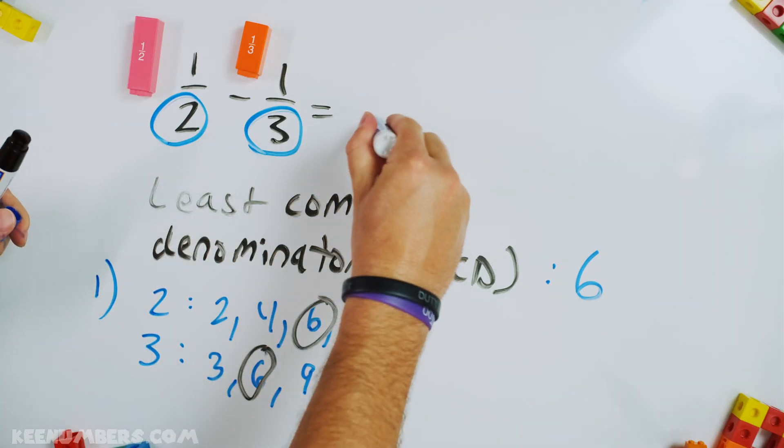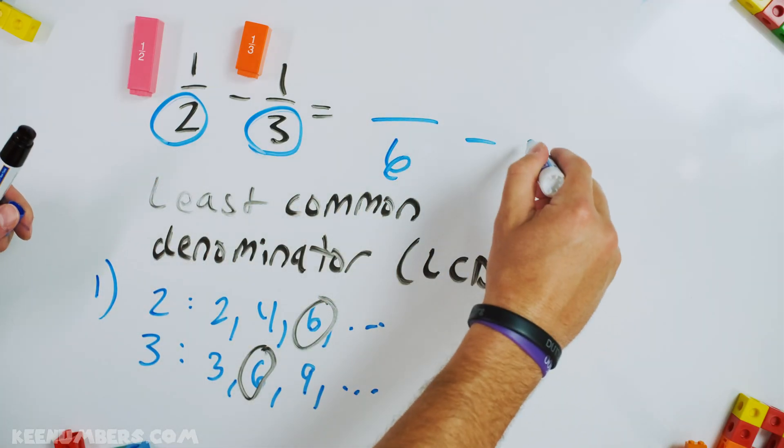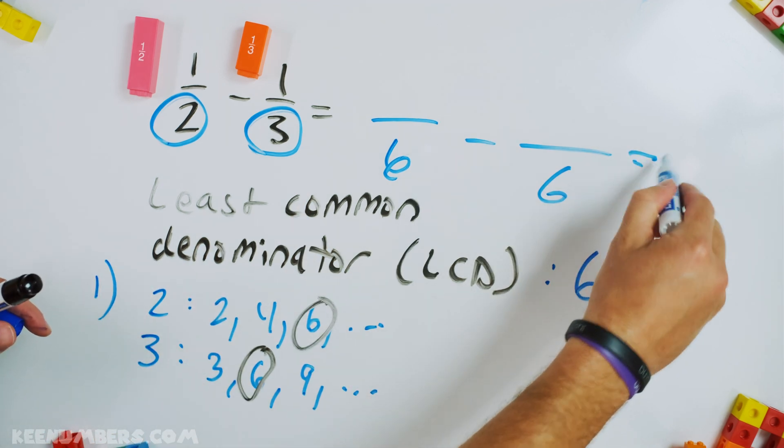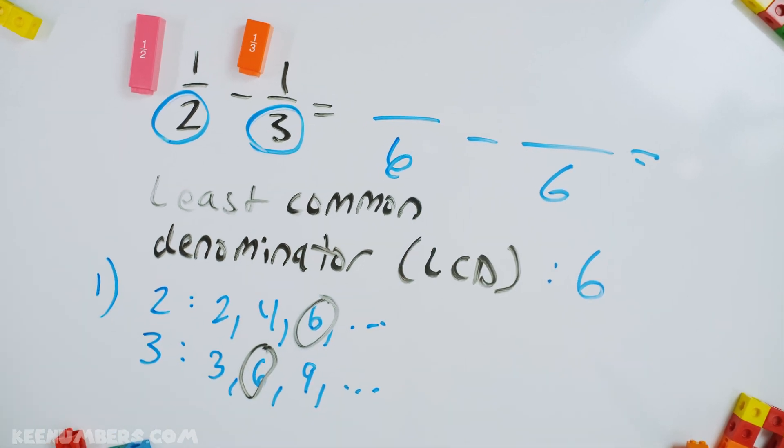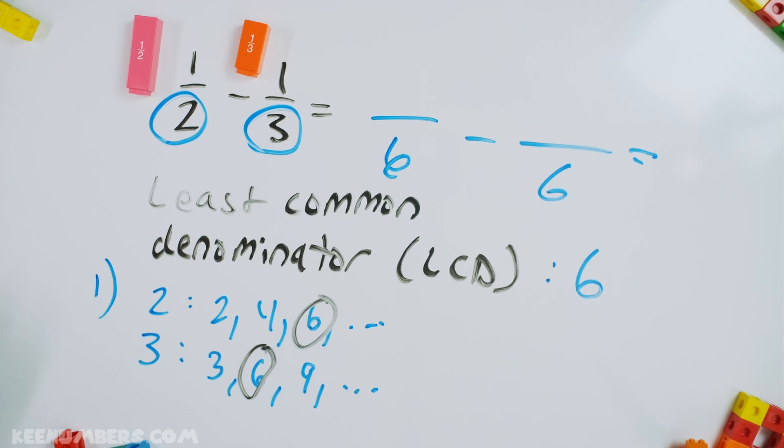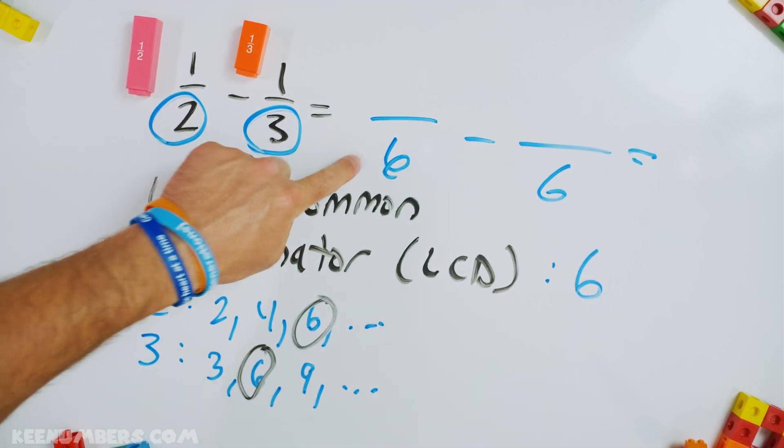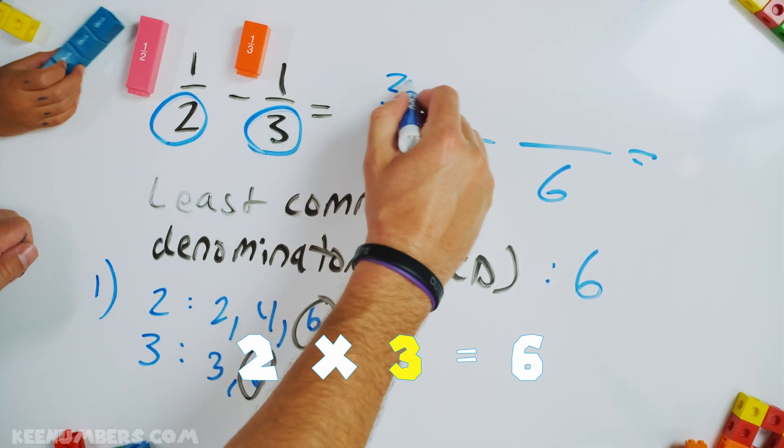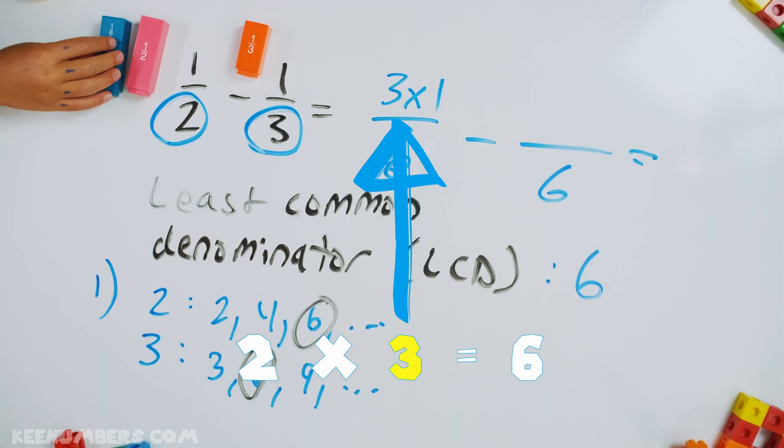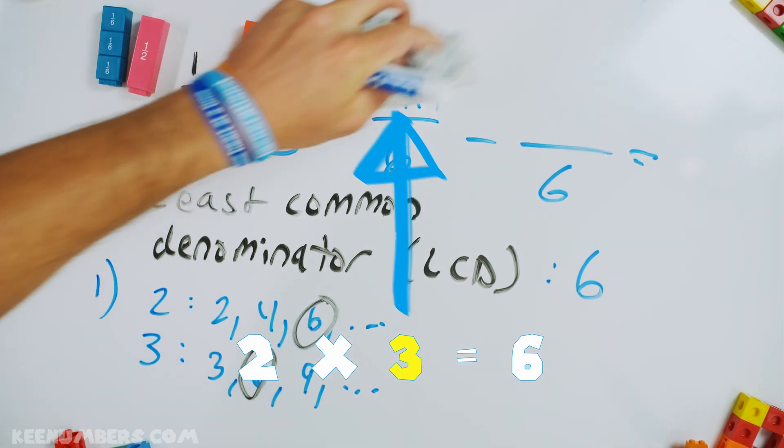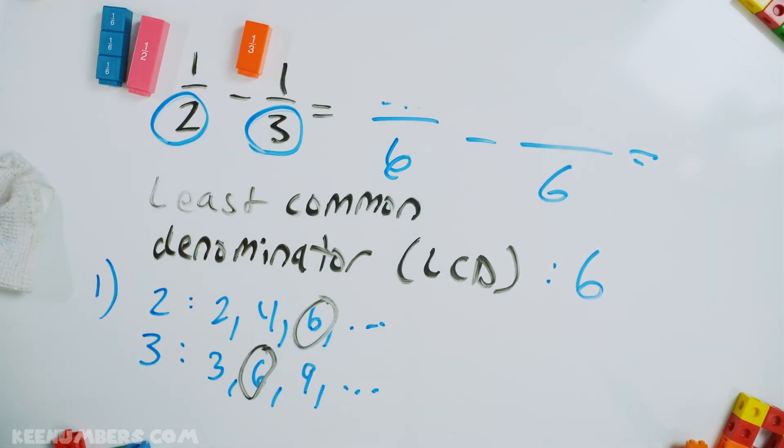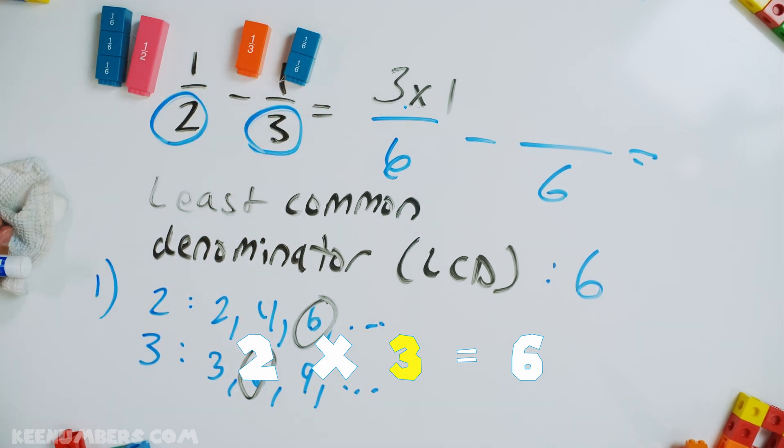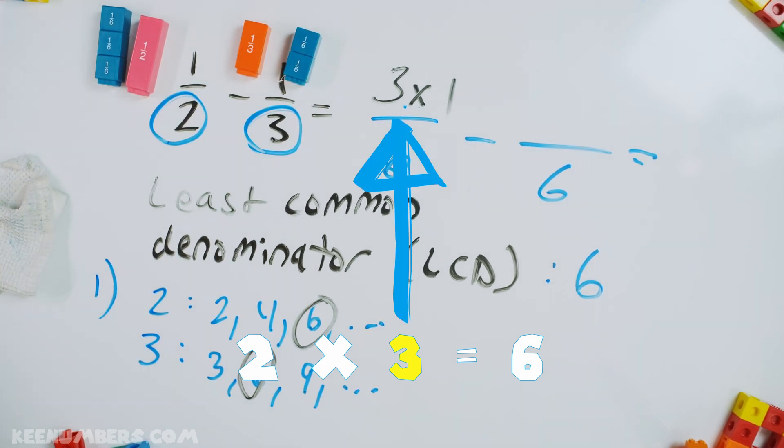One half is how many sixths? And then we're going to subtract one third, which is how many sixths? You may use the sixths fractions. Two goes into six three times, and so that means we have three ones up here. I need to use my color convention correctly. We have three ones upstairs. Hezzy's doing a substitution. Excellent job.